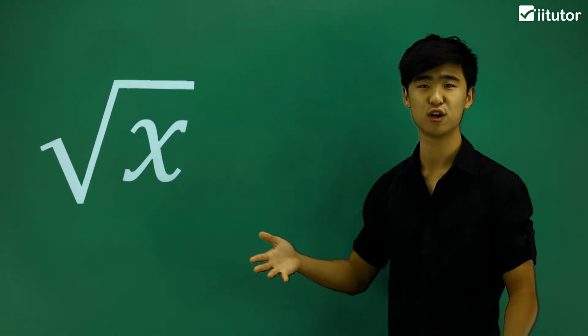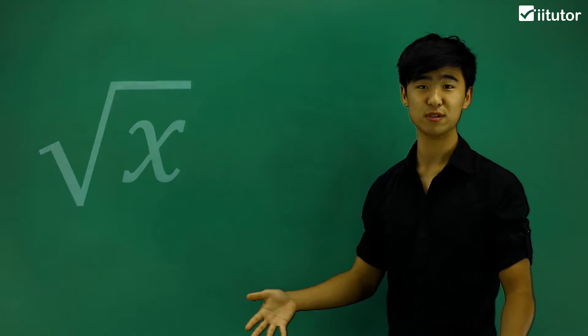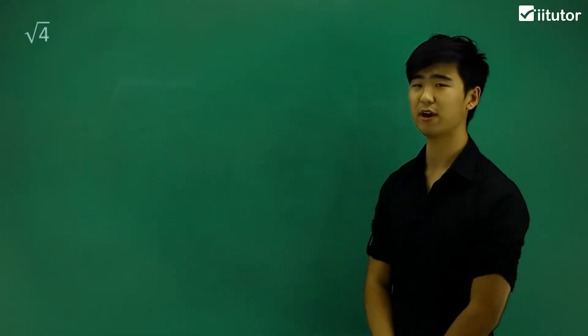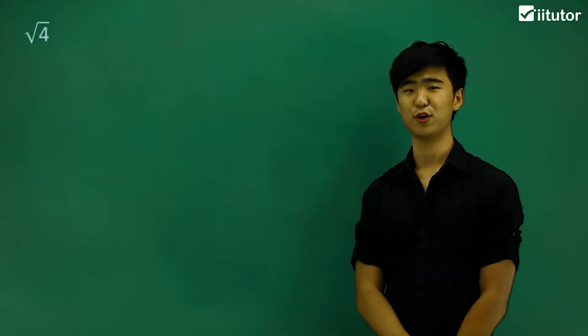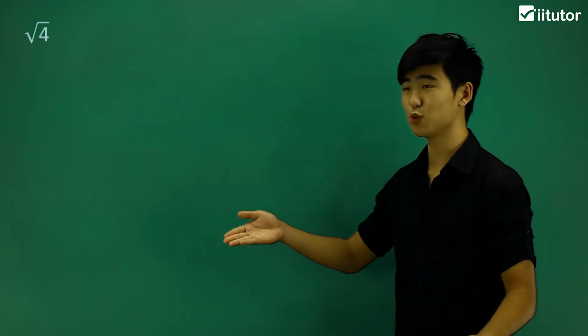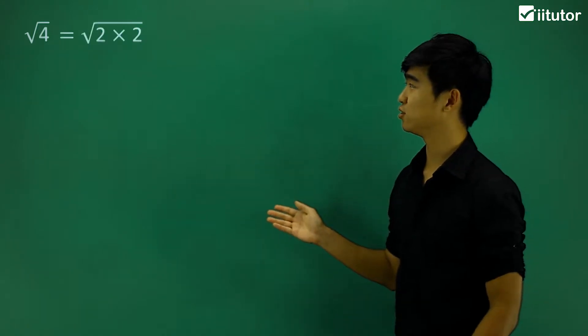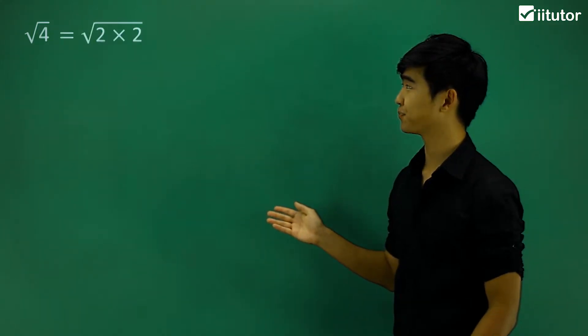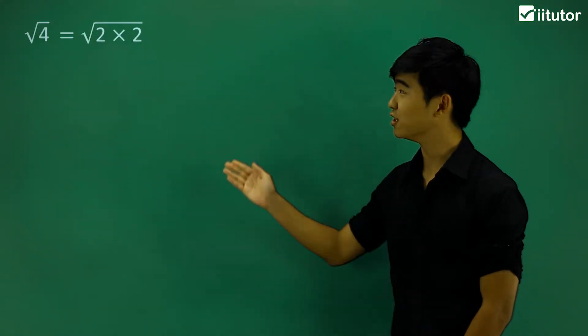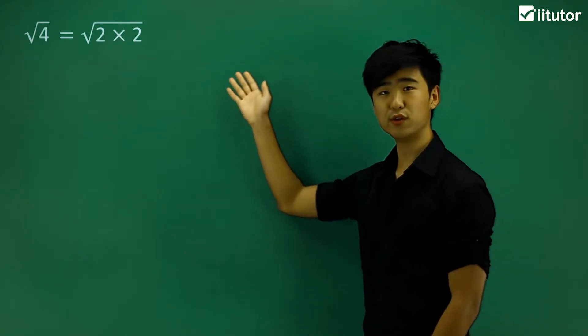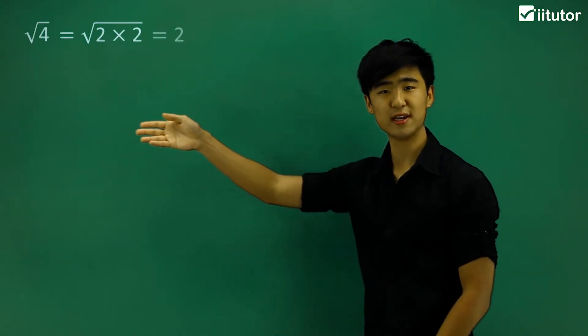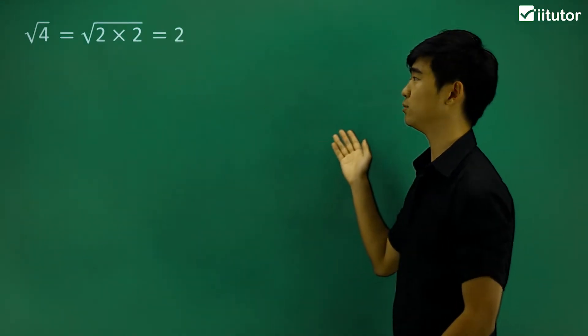Let's look at some real numbers. We have the square root of 4. Now 4, we all know, is a square number. We can break that down into 2 squared, or in other words, 2 times 2. So the square root of 2 times 2 — now that we have 2 times 2 inside, we can cancel out the square root sign, and we're left with simply just 2.